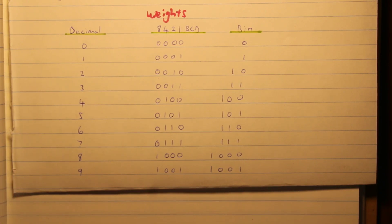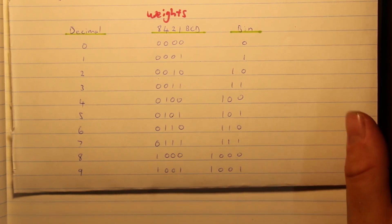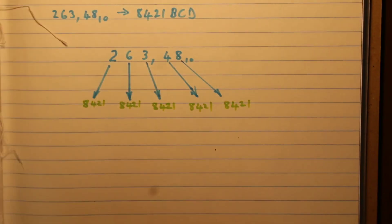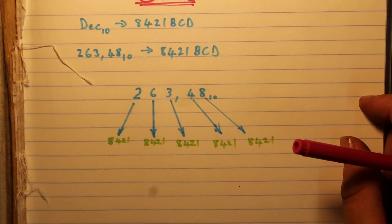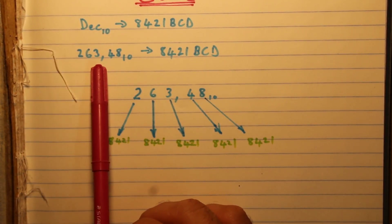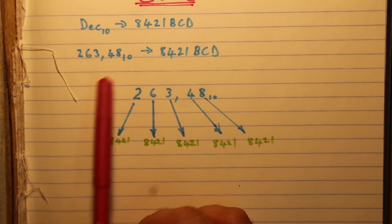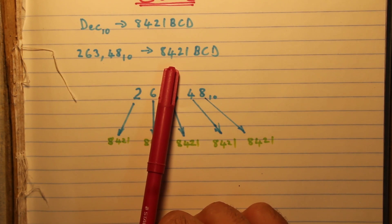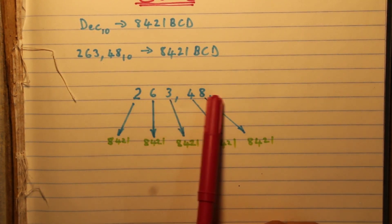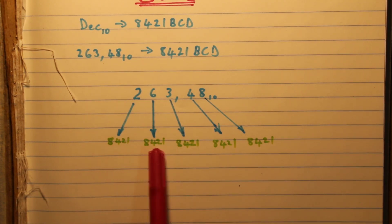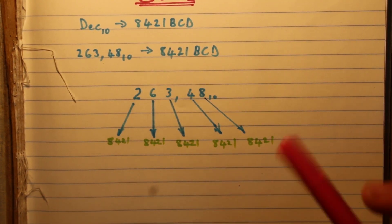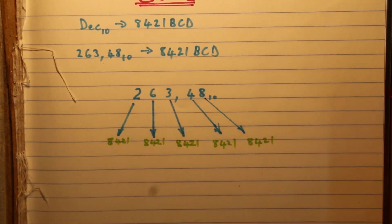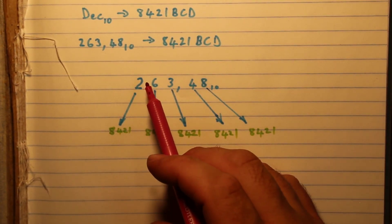I want to show you a quick example of how this works — you're going to see how simple it is. We've got the number 263.48 and we're going to convert it into 8421 BCD. I've written the number down, and underneath each digit you can see I've written 8 4 2 1, repeated for each digit position.